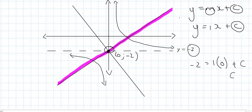The x value is 0, and so the c value, because this is 0, is just going to be negative 2. For a straight line, the c value is also the y-intercept, and we can see that it's going through negative 2. So, the equation of that purple line is y equals 1x minus 2.